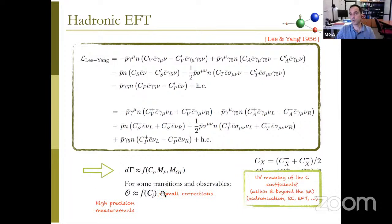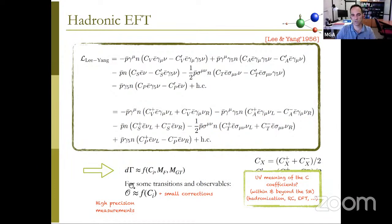Small corrections to these expressions are calculable and indeed small if you choose your observables wisely. Most work in the last decades in this field involves either carrying out very precise measurements or understanding how these Wilson coefficients connect to underlying physics — going through hadronic matrix elements, radiative corrections, and matching to other EFTs.